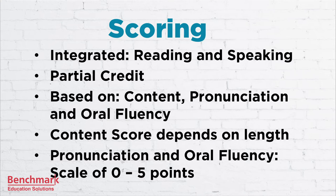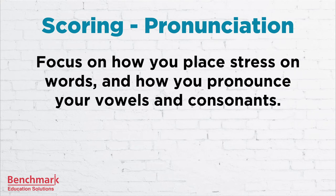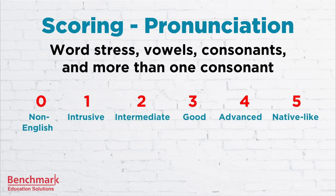The first scoring criteria is pronunciation. When you're preparing for pronunciation, focus on how you place stress on words and how you pronounce your vowels and consonants. Be sure to watch out for words that have two or more consonants in a row — they can be tricky. Here's a scale of how you're scored on pronunciation. Basically, this depends on how easily a native English speaker could understand what you're saying.